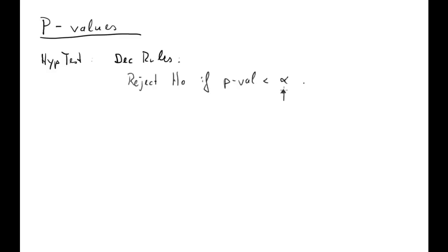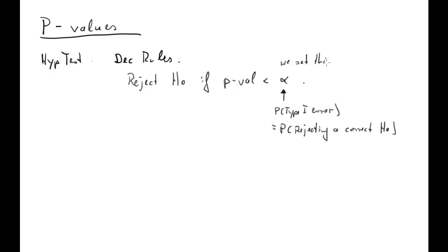One of the keys to understanding what the p-value is, is to understand what the alpha is — that is the probability of a Type 1 error. That means it's the probability of rejecting a correct null hypothesis, and we set this. We tell ourselves, before we do anything about the test, what probability do we allow ourselves to reject a correct null hypothesis. And even when you use p-values in a hypothesis test, you still need to set an alpha.